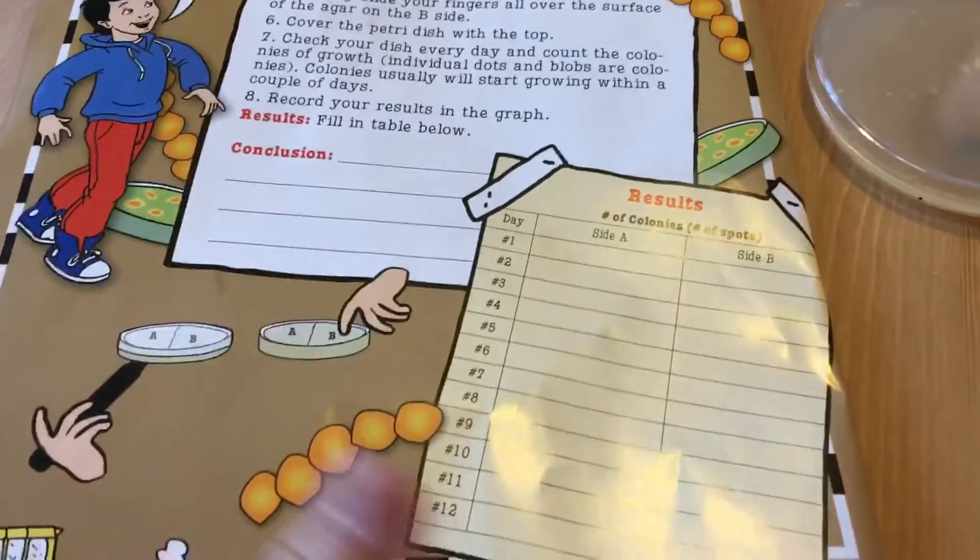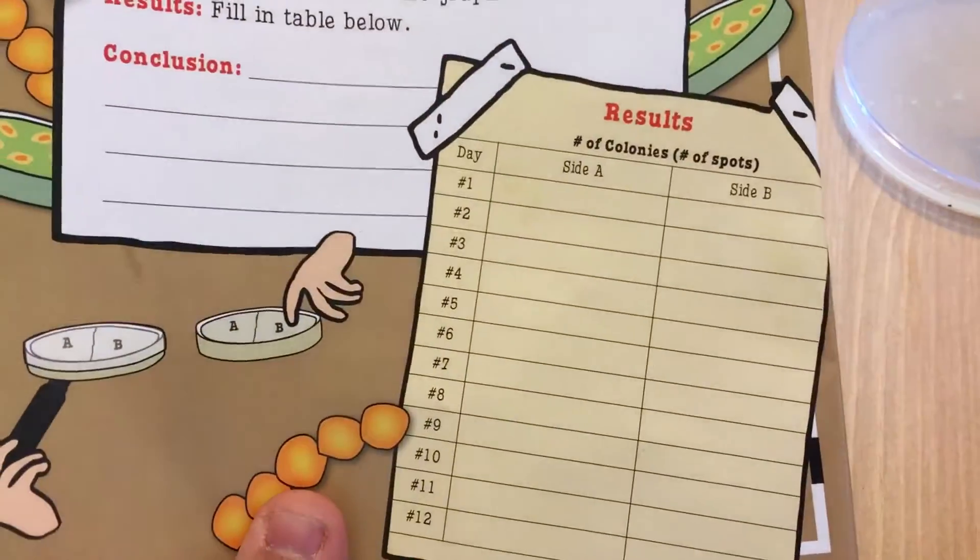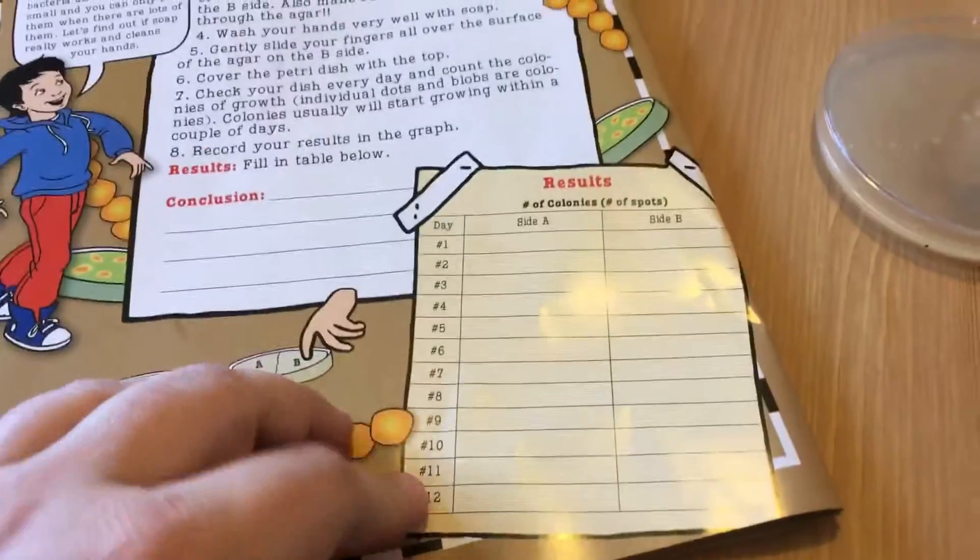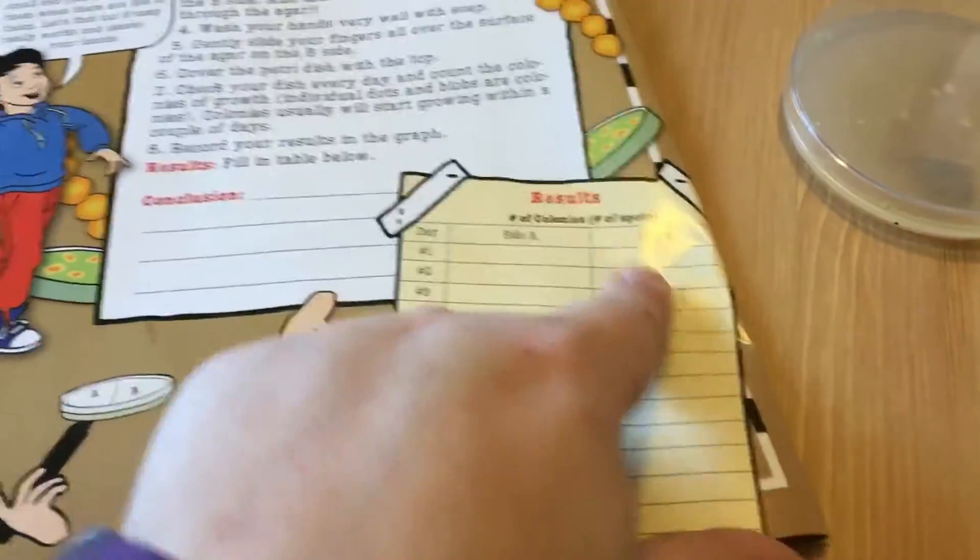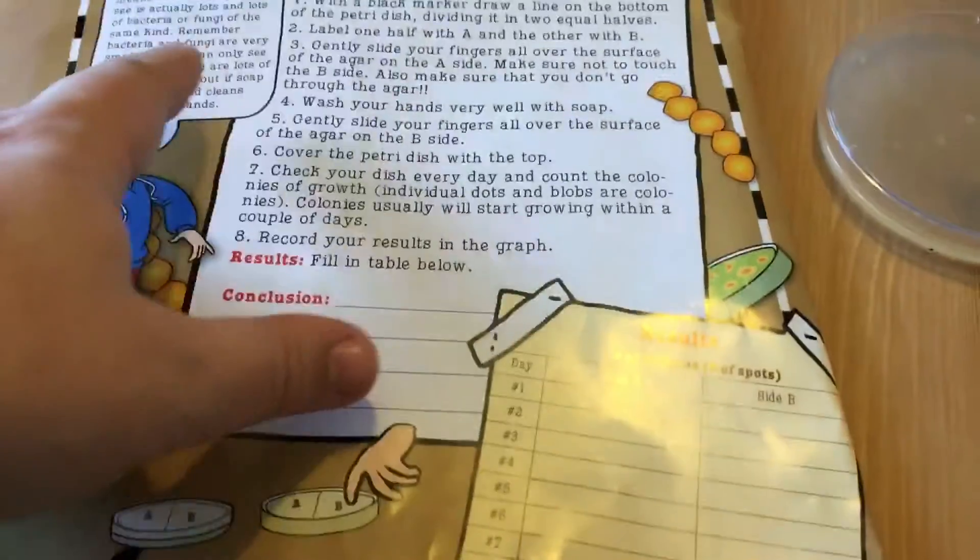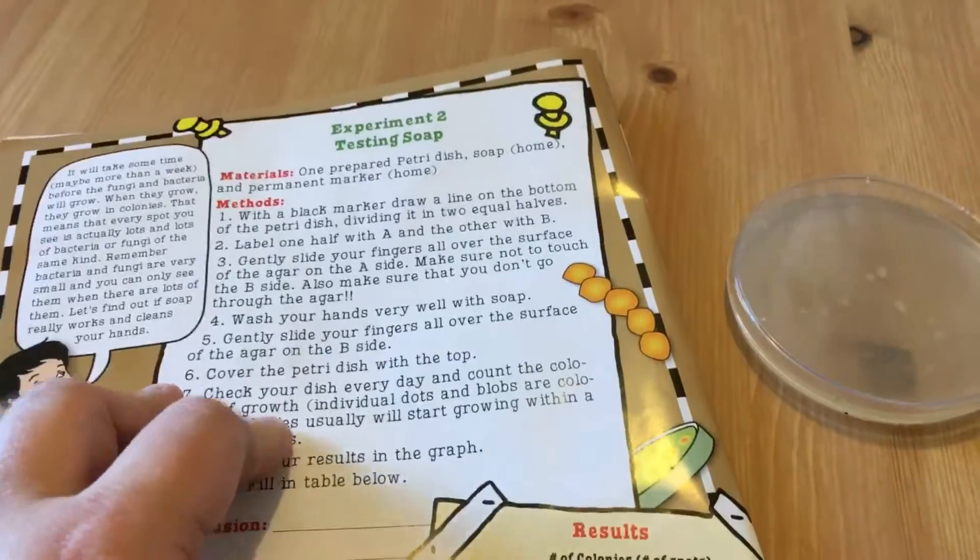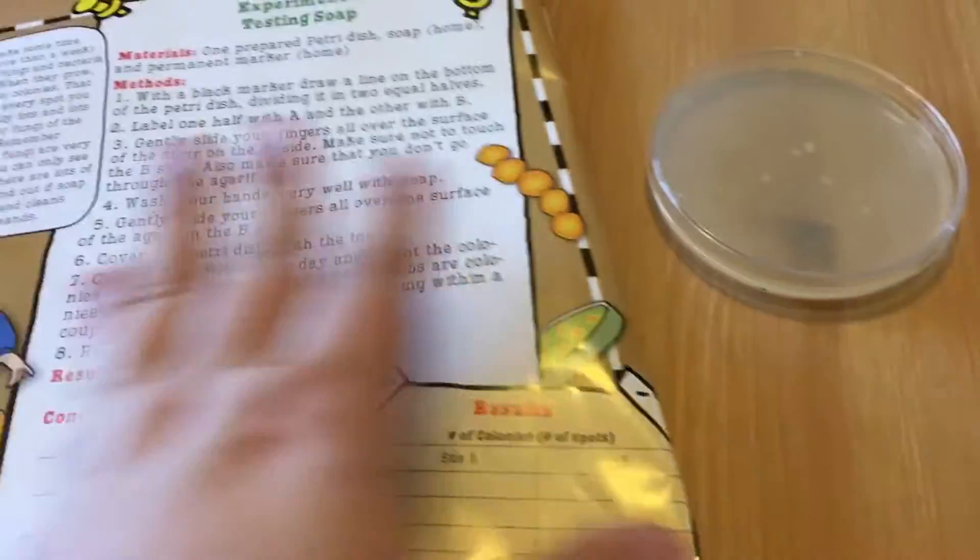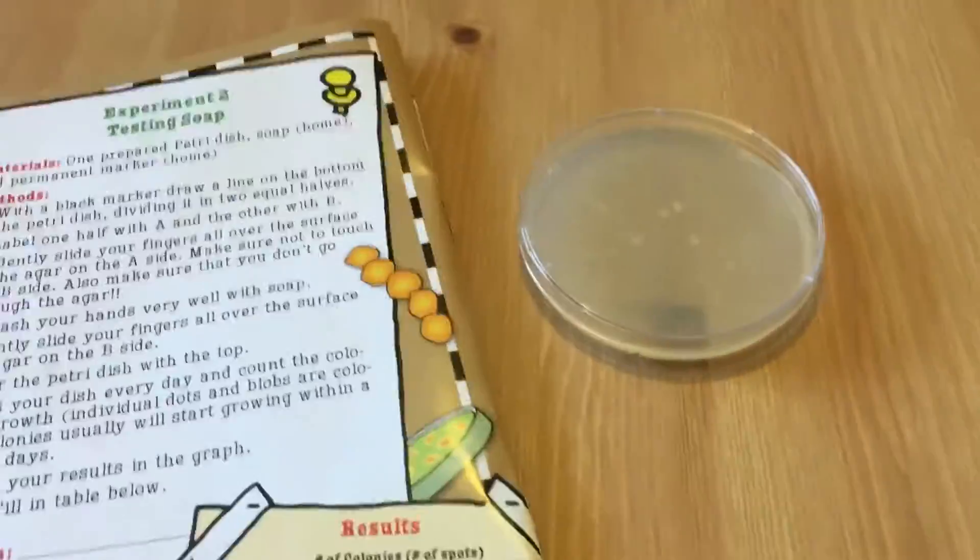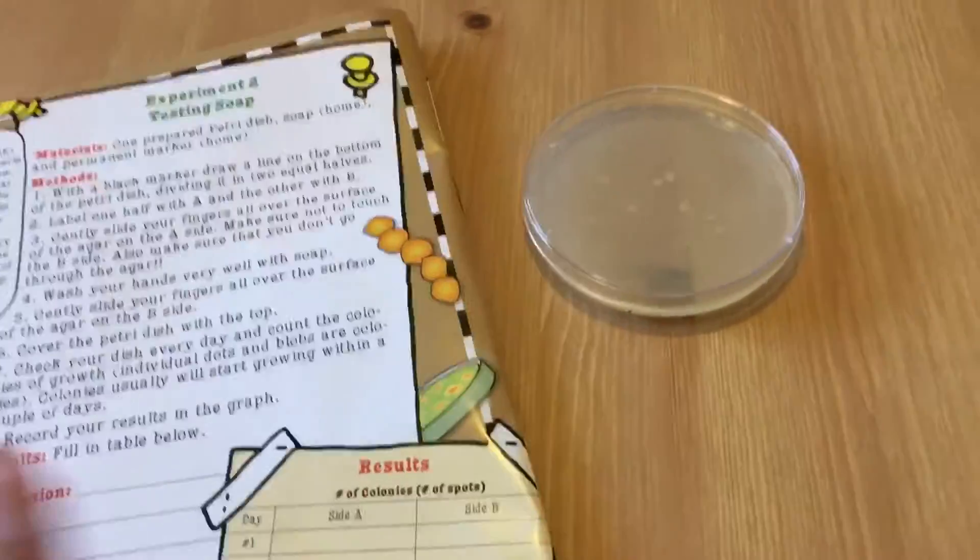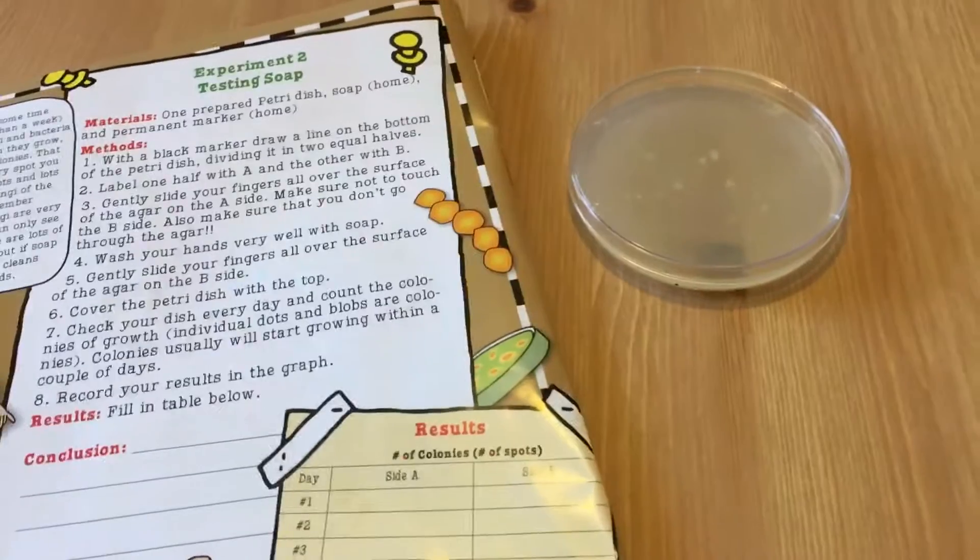We're also going to make a list. I'm actually probably going to draw this on the dry erase board and we will keep track of what's growing, how many colonies we have. This does say it may take up to a week for growth, so it's kind of a be patient and watch it each day thing. So we are going to go wash our hands and I'll show you how we gently rub our fingers over the agar.